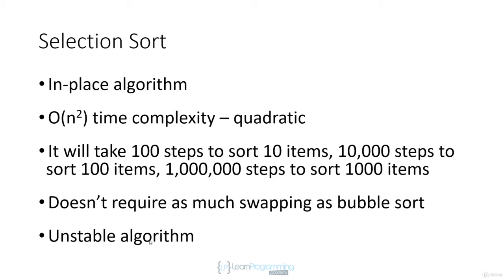Selection sort will usually perform better than bubble sort. I say usually because you might have an array that's almost sorted, so bubble sort doesn't have to swap that much — but in the average case, generally selection sort will perform better. However, selection sort is an unstable algorithm. If we have duplicate elements, there's no guarantee their original relative order will be preserved, because on each pass we swap the largest element with whatever is occupying the last position in the unsorted partition. It's very possible we could take the second duplicate value and move it in front of its twin.